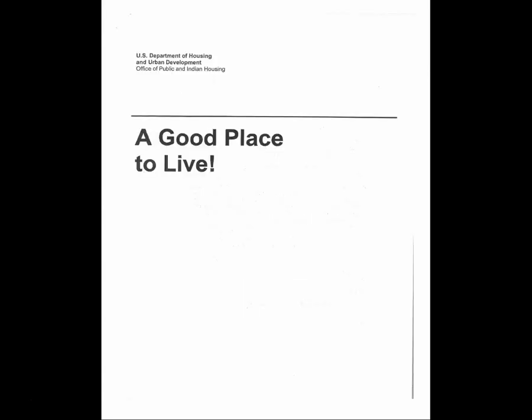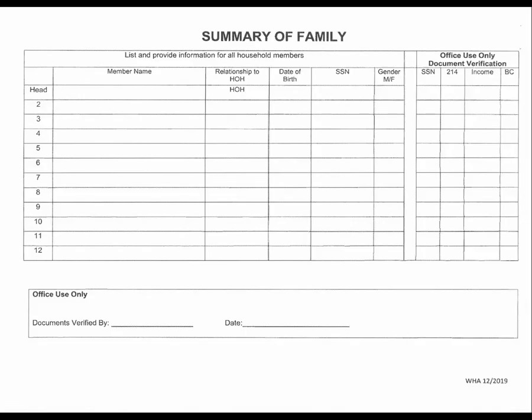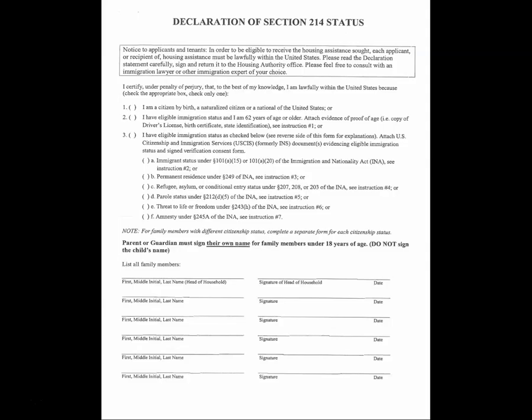There is a packet of documents requiring your signature. The forms are as follows. The Voucher Briefing Checklist — by signing this document, you are certifying that you received the Voucher Briefing Reference Guide. The Family Summary Form — please complete each line for each person going to live in the HCV assisted unit.